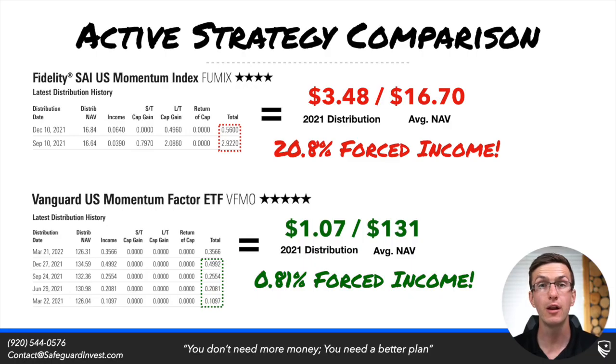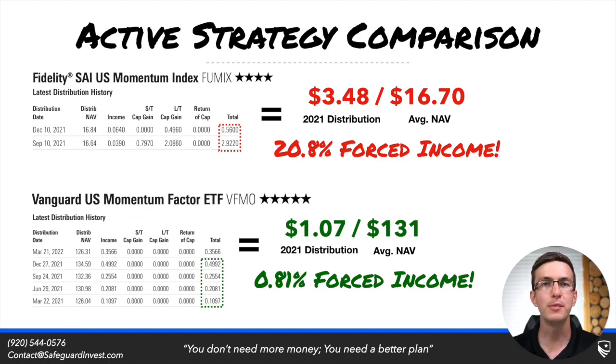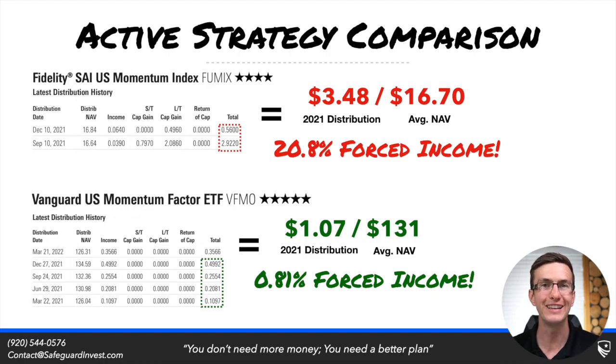Thus far we've been comparing passive or index funds. The real benefit of this tax loophole comes in if you're more of an active investor. When comparing an active mutual fund to an active ETF, the difference becomes much larger, because with an active fund the manager is buying and selling more often, delivering additional capital gain distributions to investors.